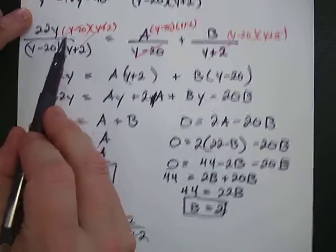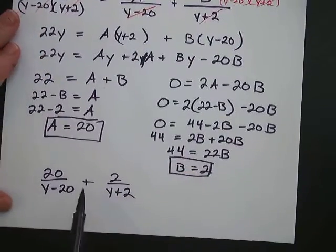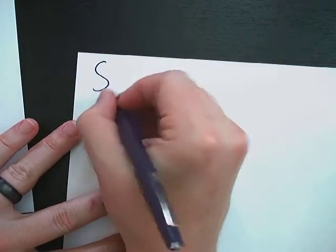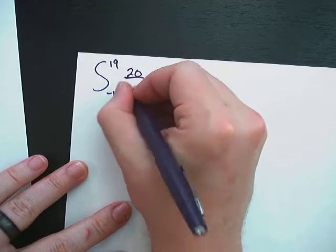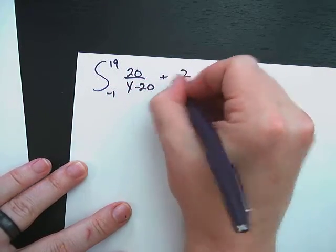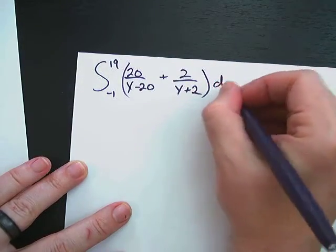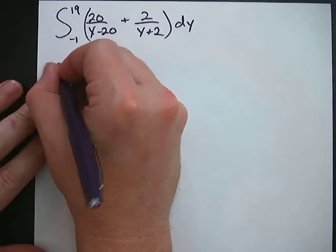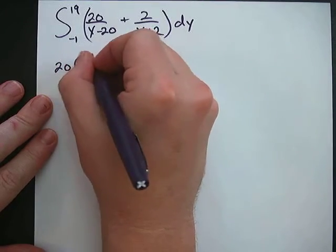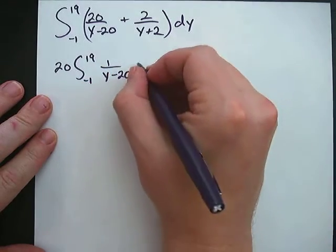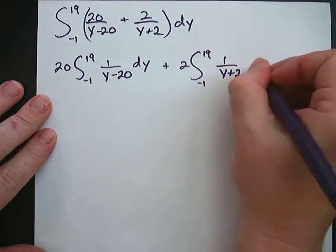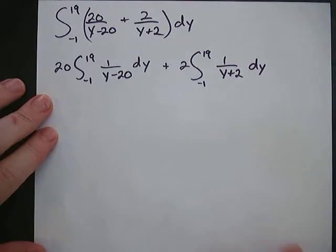So instead of 22y divided by (y² minus 18y minus 40), we can write the integrand as 20 over (y minus 20) plus 2 over (y plus 2). Our new integral from negative 1 to 19 becomes: 20 times the integral of 1 over (y minus 20) dy, plus 2 times the integral of 1 over (y plus 2) dy. These are much easier because they are just natural logarithms.